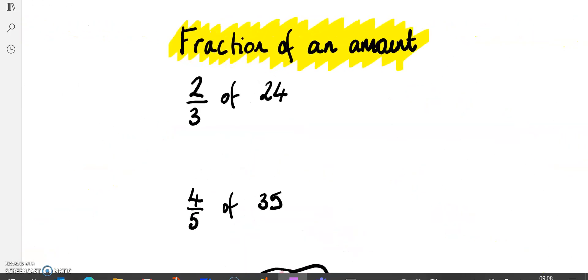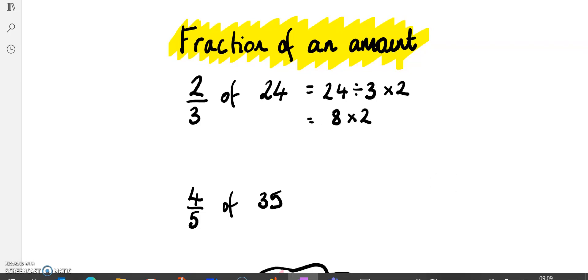The first thing we're going to look at is how to find the fraction of an amount. The first question we've got here is two-thirds of 24. So thirds is the important word here. If we're thinking about thirds, we're thinking about three parts. We're going to divide 24 by 3, and that would give us one-third, but we want two-thirds so we need to multiply by 2. Essentially we divide by the denominator and multiply by the numerator. 24 divided by 3 is 8, which we multiply by 2 and we'll get 16.